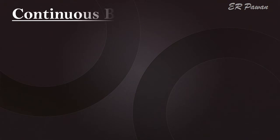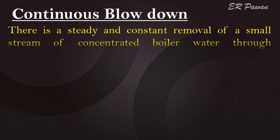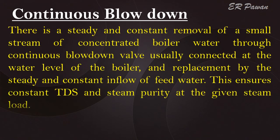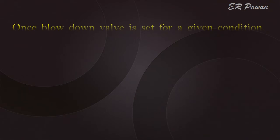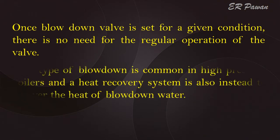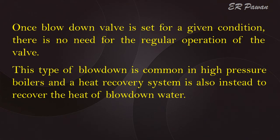Continuous blowdown: There is a steady and constant removal of a small stream of concentrated boiler water through a continuous blowdown valve, usually connected at the water level of the boiler, and replacement by a steady and constant inflow of feed water. This ensures constant TDS and steam purity at the given steam load. Once the blowdown valve is set for a given condition, there is no need for regular operation of the valve. This type of blowdown is common in high pressure boilers, and a heat recovery system is also installed to recover the heat of blowdown water.